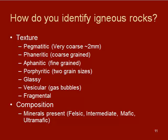So, different textures. We have pegmatitic, which is extremely coarse-grained; phaneritic, which is coarse-grained; aphanitic, which is fine-grained; porphyritic, which has two grain sizes; glassy; vesicular; fragmental; and then composition.